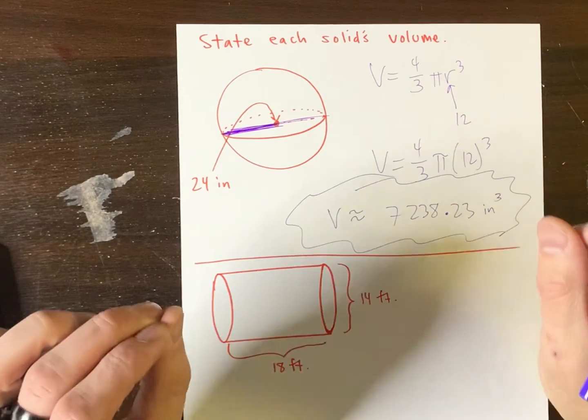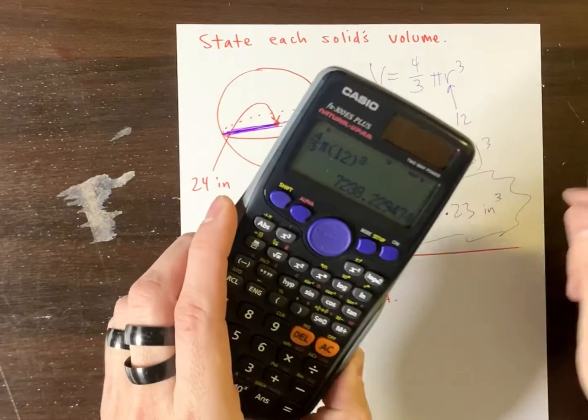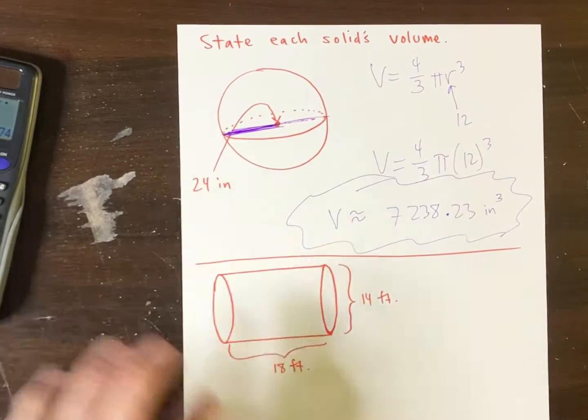And this is what they want for all these items. Identify the formula, fill in what you got to do, calculator and round accordingly. Let's try another one.